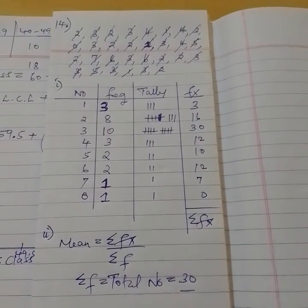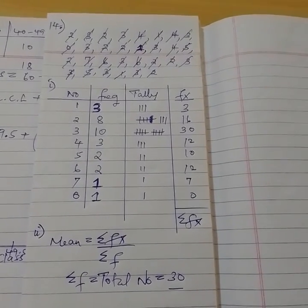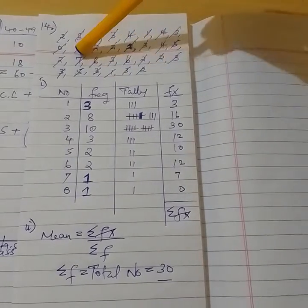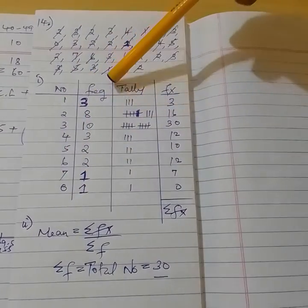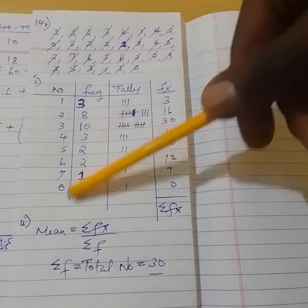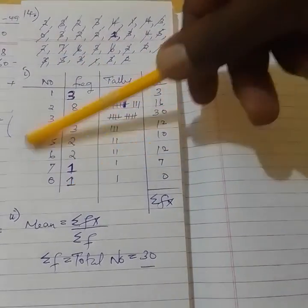Statistics 1, they wanted you to create a frequency distribution table given some data. So from this data, you have to arrange in ascending order, then identify the number of times that that appears. You have the frequency column, then you have the tally. So up to here you have your frequency distribution table.